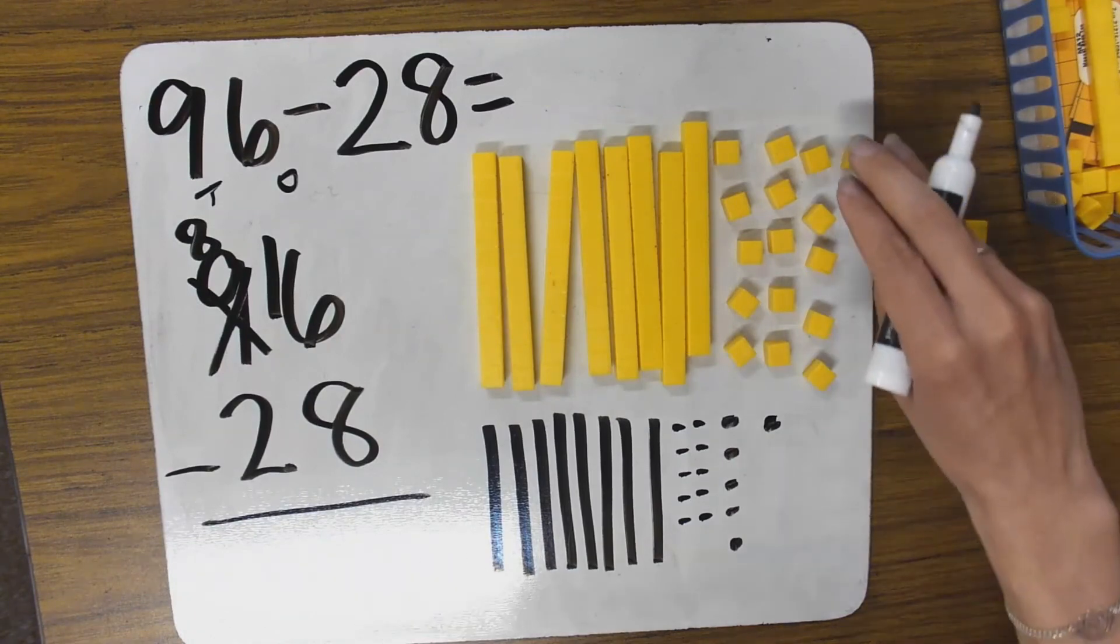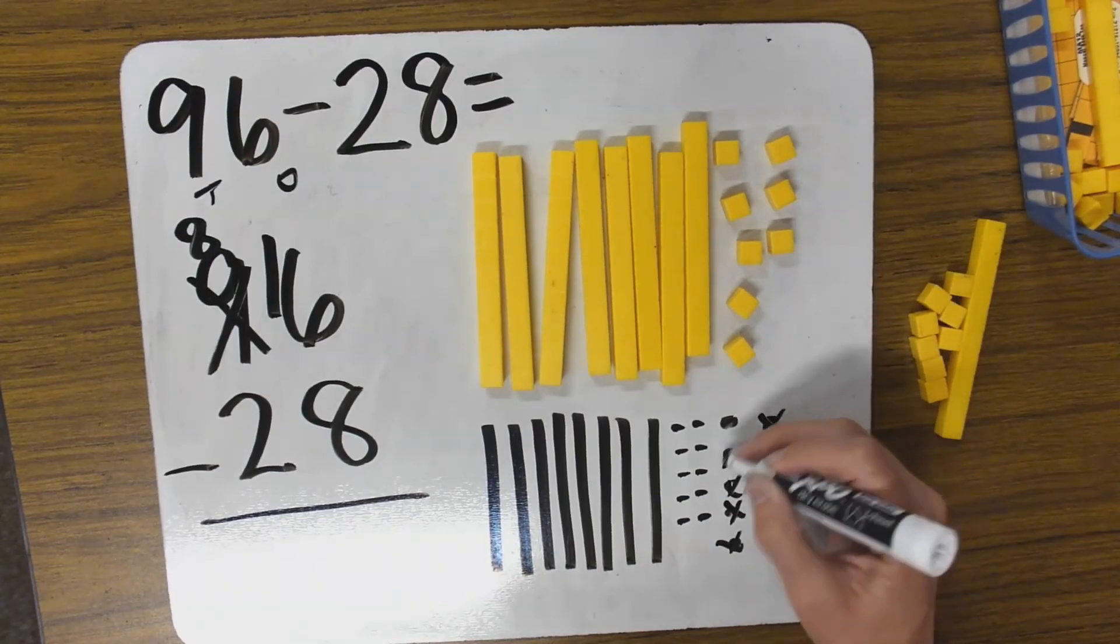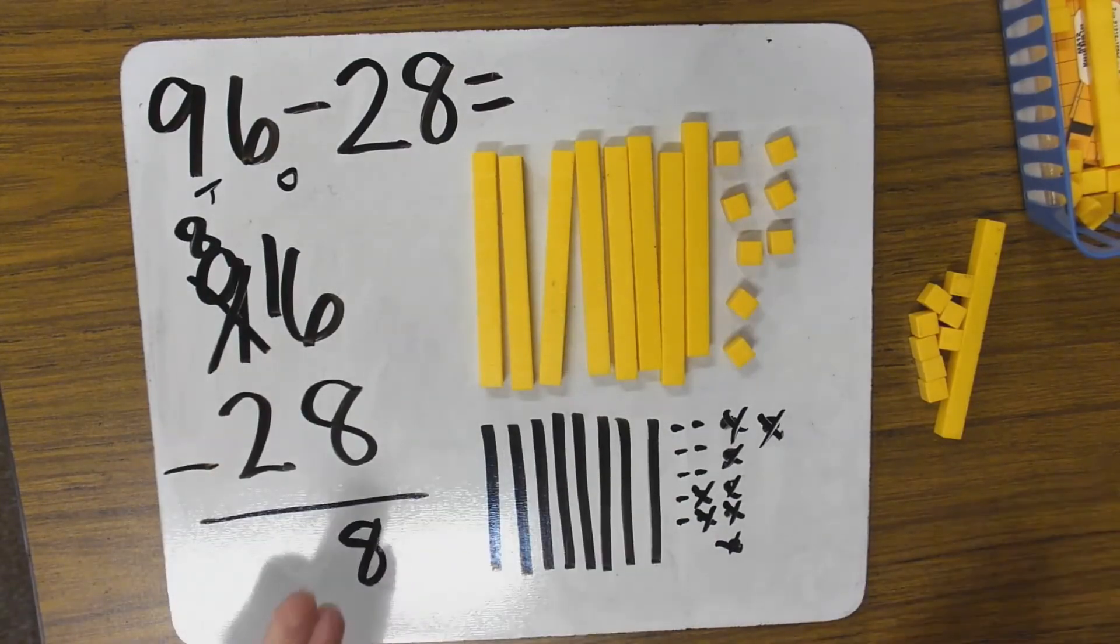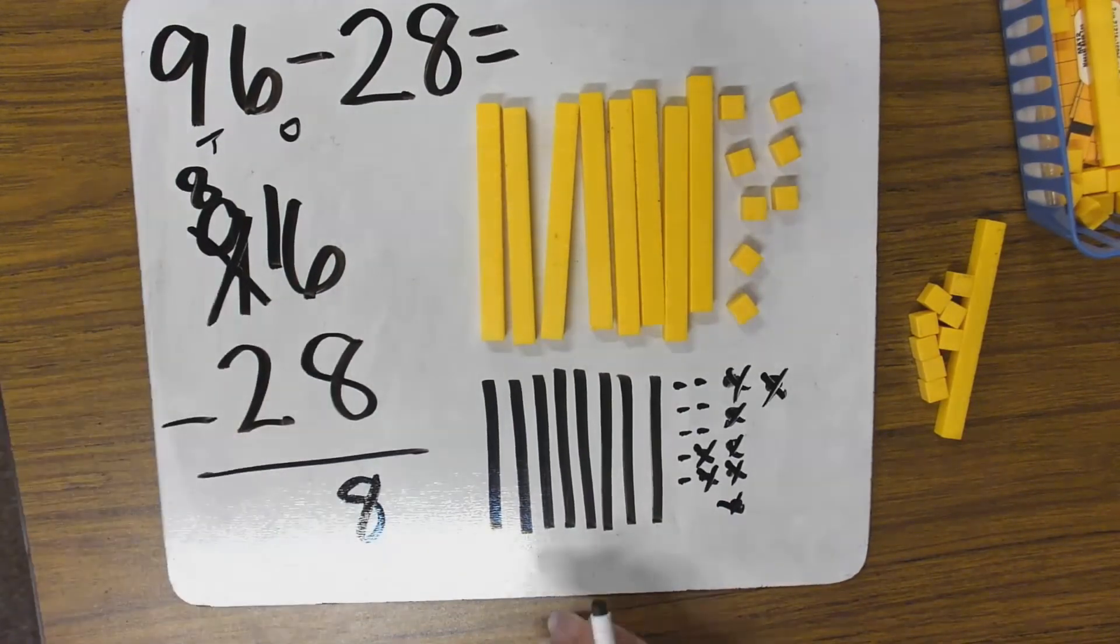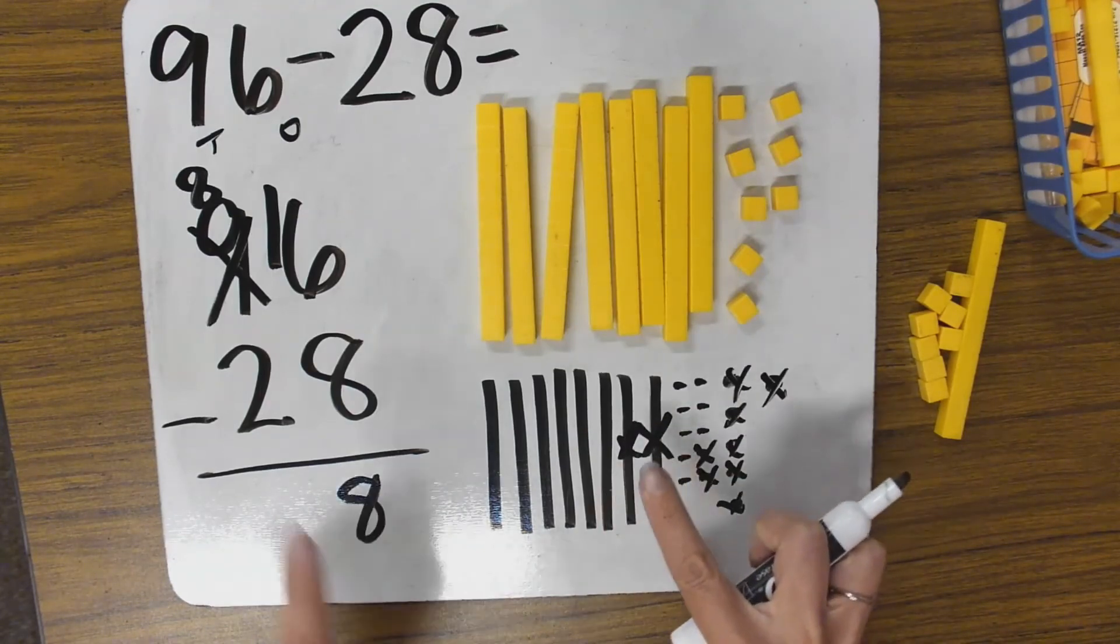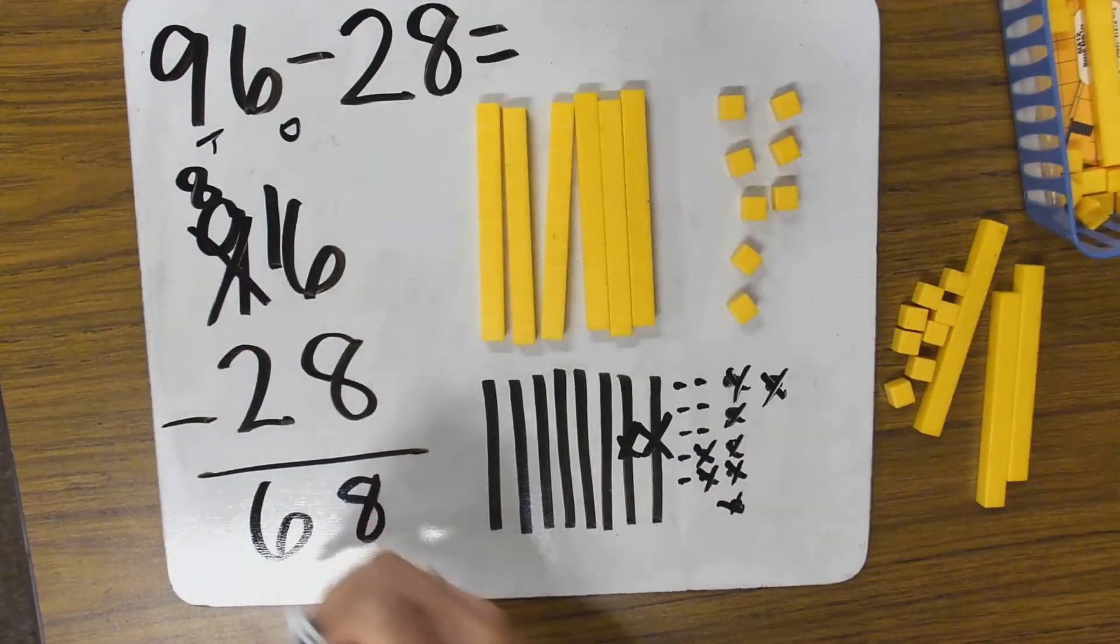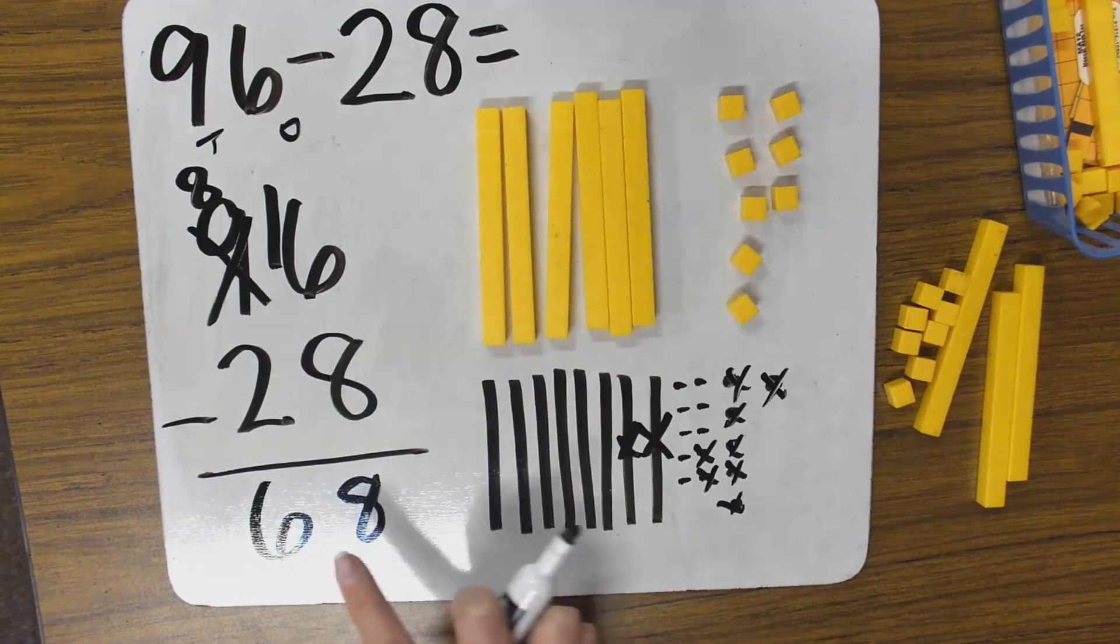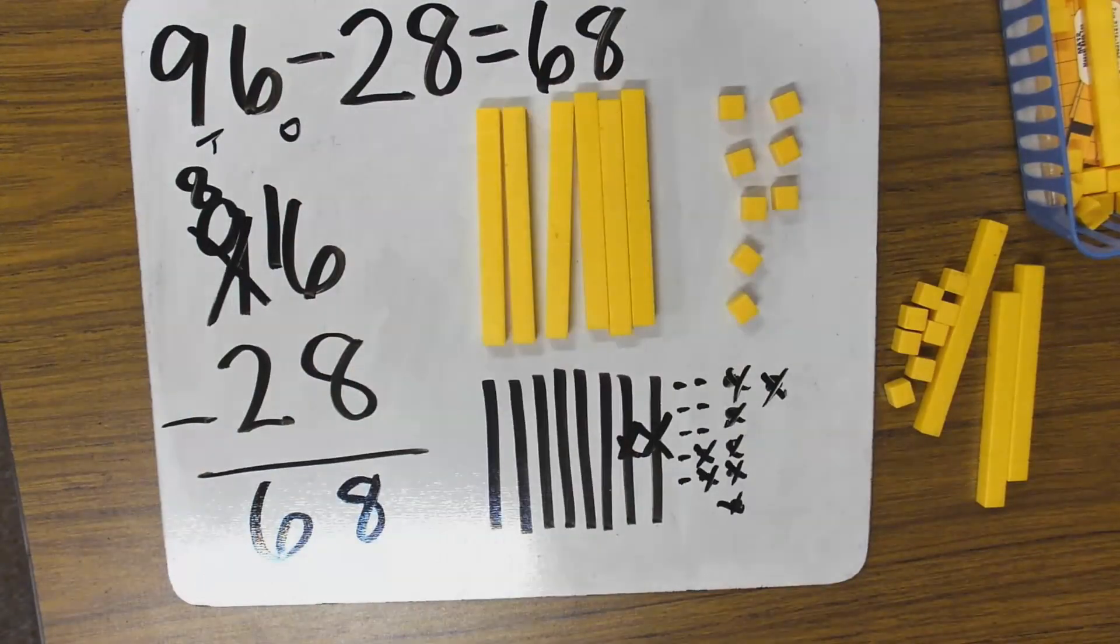Now I can subtract. 16 minus 8. I'm going to take away 8 1s. Cross out 8 1s. And if you know your doubles facts, 16 minus 8 is 8. Now I'm not done this time because I also have some 10s to take away. I have 8. I'm taking away 2 10s. So cross out 2 10s. Notice here I didn't erase them because this time we're subtracting. And I'm going to take these 2 10s away. And I am left with 6 10s. 6 10s, 8 1s equals 68. So 96 minus 28 equals 68.